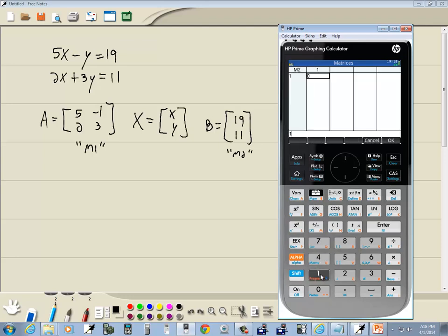And we got 19, enter, and then I'll do a down arrow, left arrow, and I'll put 11 in, and press enter. Okay, so that's going to be our B in M2. Now I'll do a home to exit out.